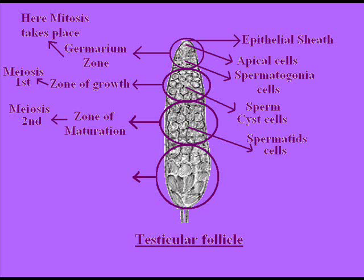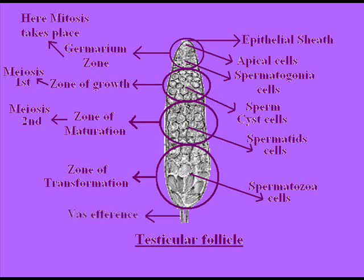The fourth zone is the zone of transformation, in which spermatid cells are present. The last part of the testicular follicle: each testicular follicle opens by means of a short slender duct which is known as the vas efferens.